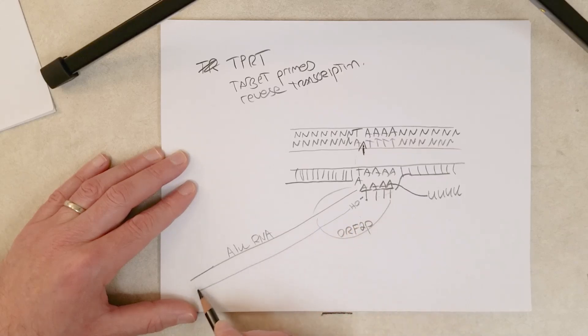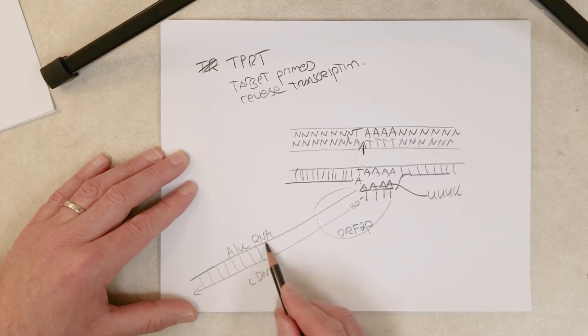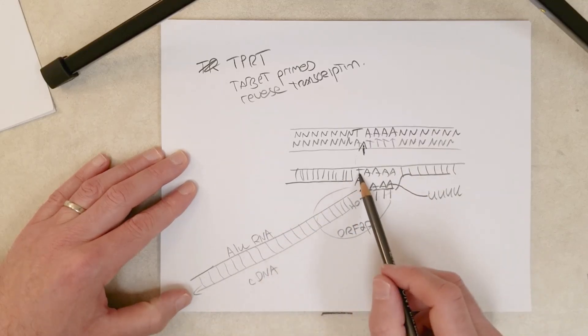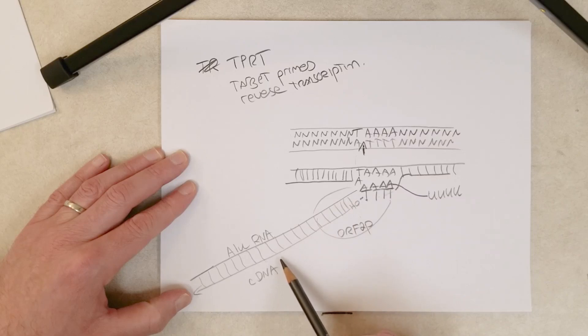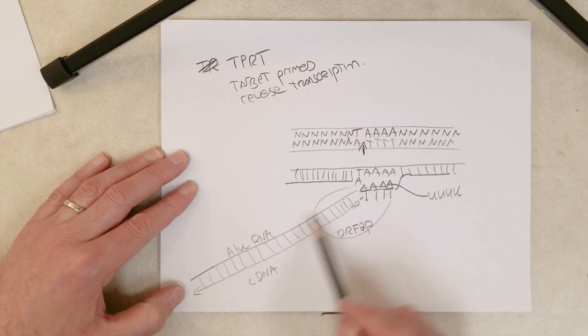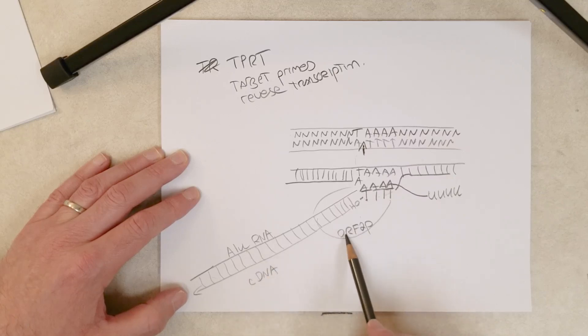This complementary DNA molecule that's complementary to the ALU RNA could be synthesized. We'll have the RNA-DNA hybrid, and then the rest of the integration mechanism into the genome will be identical to that of the L1 integration mechanism. All those details haven't been completely worked out, but our current model suggests this is how the ALU transposition mechanism happens. It hijacks the proteins, at least one of the proteins of the L1 element, ORF2P, and by hijacking that it's able to integrate back into the genome at a new location.